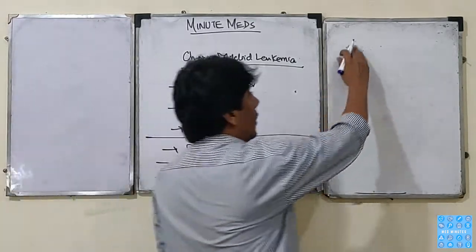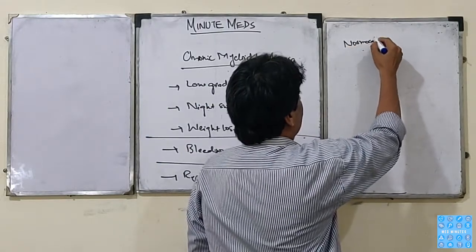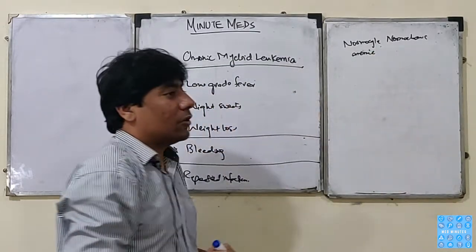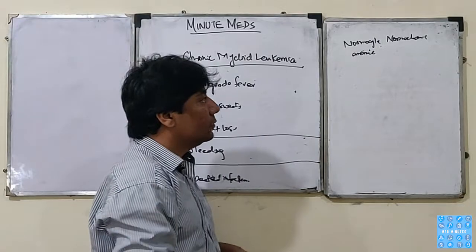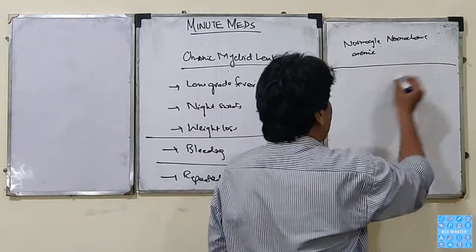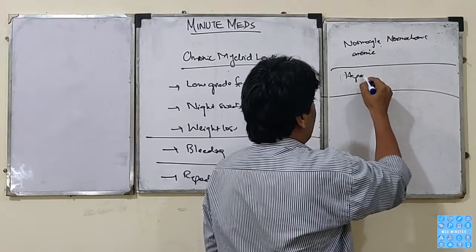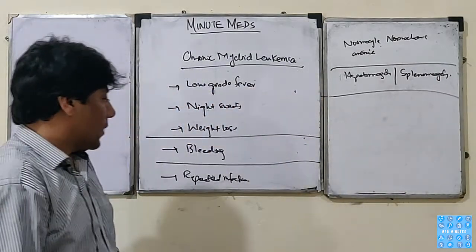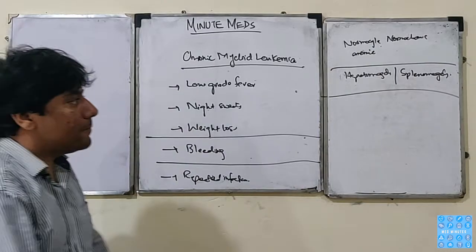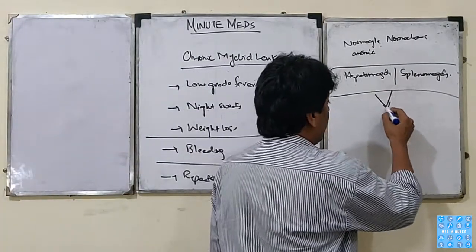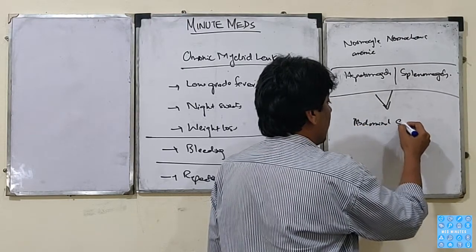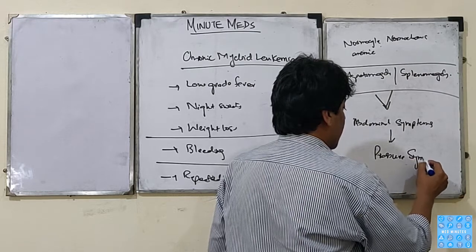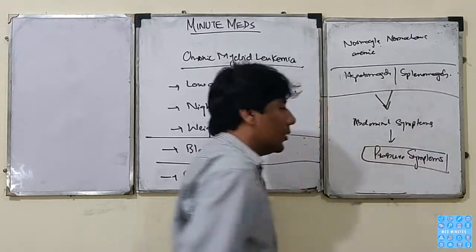Due to pressure on the marrow, there is decreased normal blood cell production. To compensate, we have extramedullary hematopoiesis, which leads to organomegaly in the form of hepatomegaly and splenomegaly. The patient presents with hepatomegaly and splenomegaly, leading to abdominal symptoms — mostly pressure symptoms and initial abdominal discomfort.